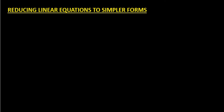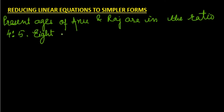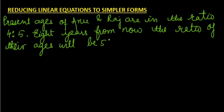The question: the present ages of Anu and Raj are in the ratio 4:5. Eight years from now, the ratio of their ages will be 5:6. Find their present ages.